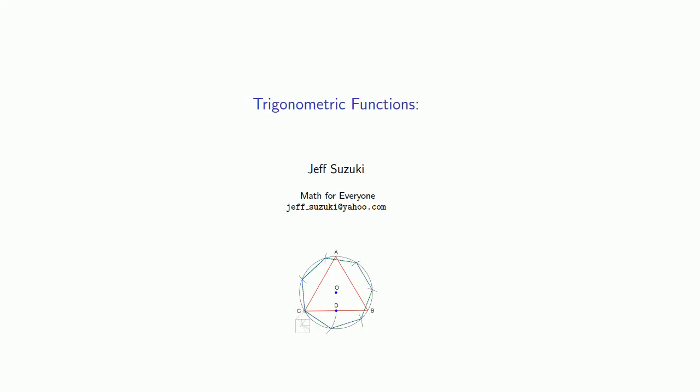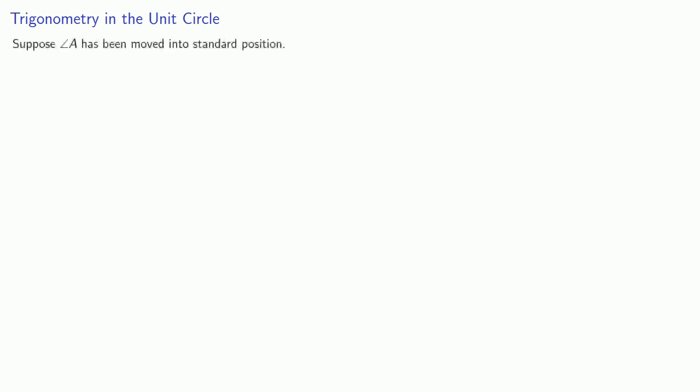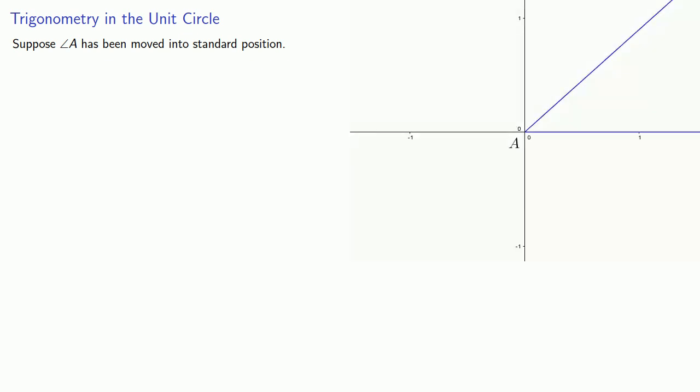Let's take a look at trigonometric functions beyond the right angle. We'll consider trigonometry in the unit circle. Suppose our angle has been moved into standard position — that's going to have the vertex at the origin, one side on the positive x-axis, and the other side wherever it ends up.